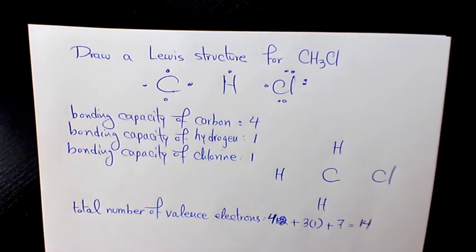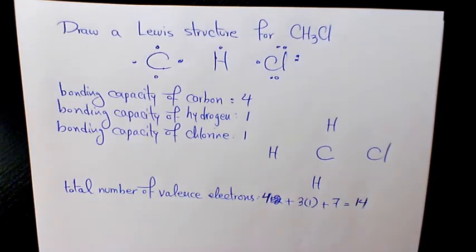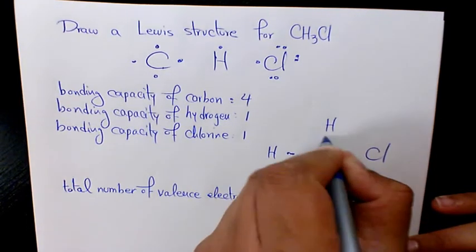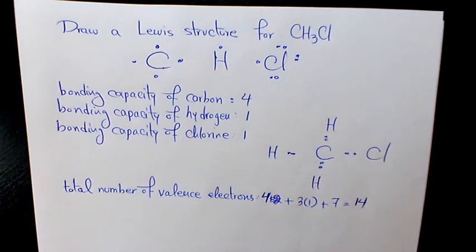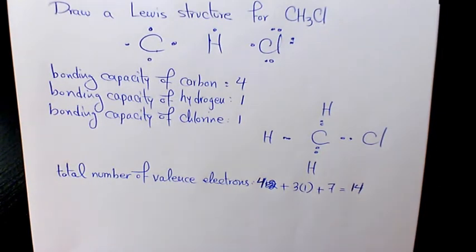Now we need to place one pair of electrons between each adjacent pair of atoms. Every two of these dots represents a bonding electron pair that forms a single covalent bond — so one-two, one-two, one-two, one-two.